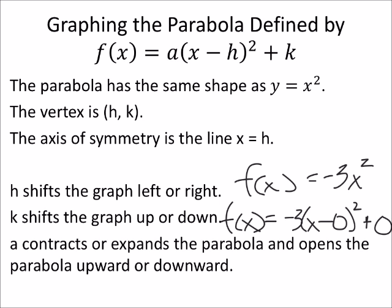See how this one shows the H and K values? 0 and 0. The A here is the negative 3, and it's just telling us that it's flipped upside down, so it's opening downward.